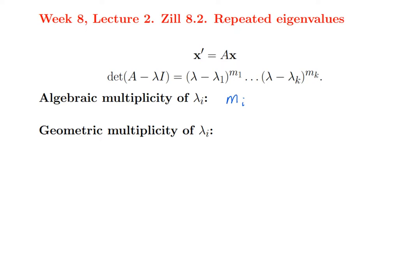For example, if I had a four by four matrix and the eigenvalues came out to be 1, 1, 1, and 7, then eigenvalue 7 would have algebraic multiplicity one and eigenvalue 1 would have algebraic multiplicity three, and the characteristic polynomial would look like (lambda minus 1) cubed times (lambda minus 7).